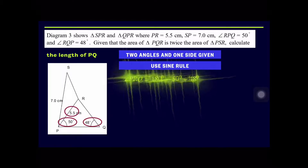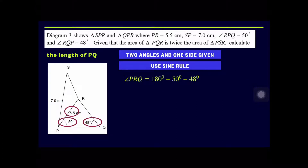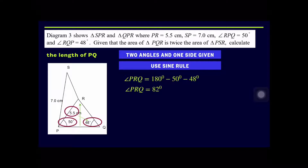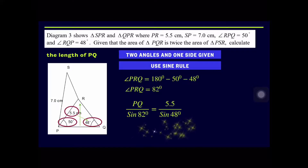Before finding PQ, we first find angle PRQ = 180° − 50° − 48° = 82°. Then applying the sine rule: PQ/sin 82° = 5.5/sin 48°. Therefore, PQ = (5.5 × sin 82°)/sin 48° = 7.329 centimeters (wait — correcting: PQ = 5.5 × sin 82°/sin 48°). The length of PQ is equal to 7.329 centimeters.